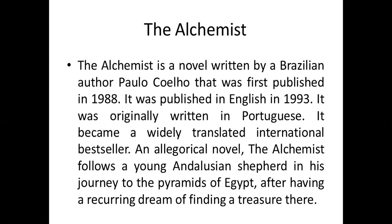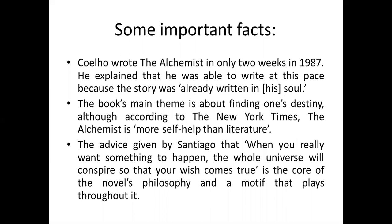The Alchemist follows a young Andalusian shepherd in his journey to the pyramids of Egypt after having a recurring dream of finding treasure there. The most important thing in this novel is the dream — it is mainly based on dream and the interpretation of dream. The writer wrote The Alchemist in only two weeks in 1987, explaining that the story was already written in his soul.